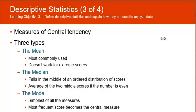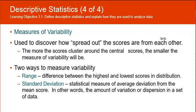Measures of variability: seeing the range of scores. The more that the scores cluster around the central scores, the smaller the measure of variability will be. And there's two ways to do this: the range, which is the difference between the highest and the lowest scores in the distribution, and standard deviation. We're not going to talk about how to calculate standard deviation because that can be kind of confusing, but it's the statistical measure of the average deviation from the mean score. So it talks about the amount of variation in a set of data.